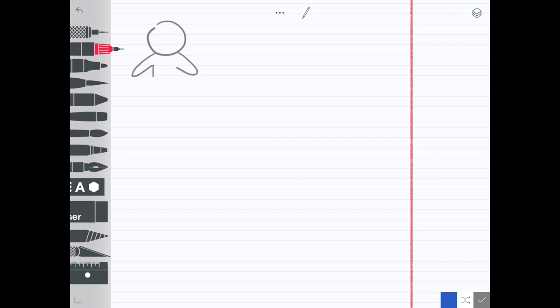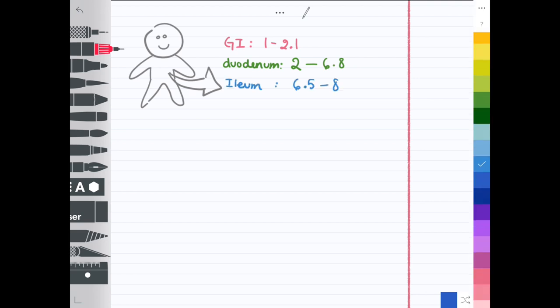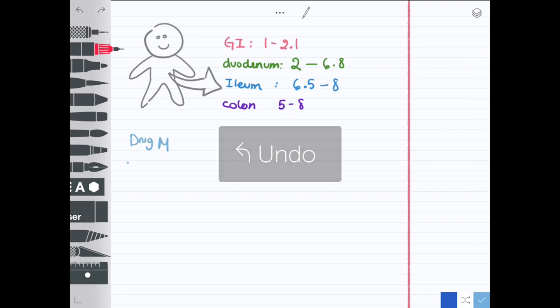Let's take that to the human body where there are varying levels of pH depending on where you are. In the GI or stomach, you have a pH of 1 to 2.1. As you move down the GI tract, the pH increases. What happens to drugs in these places? They're all influenced by the pH.